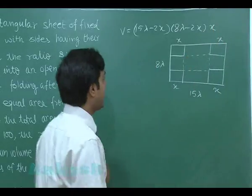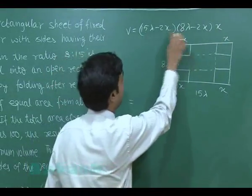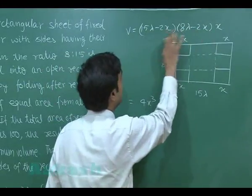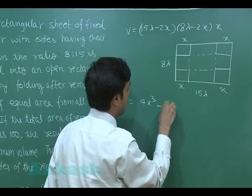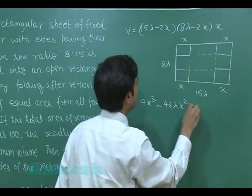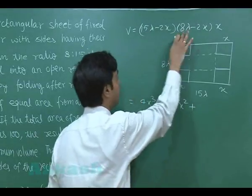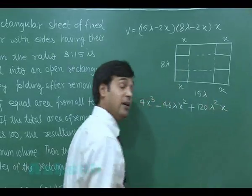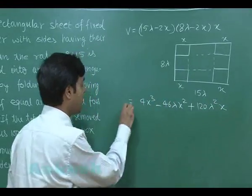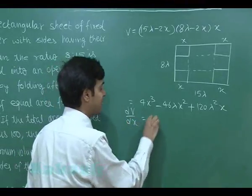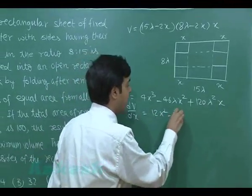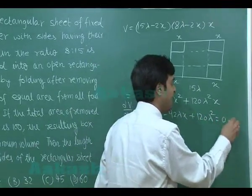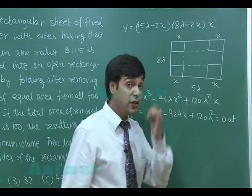Simplifying by expanding, we get V = 4·4x³ − 46λx² + 120λ²x. Differentiating to maximize: dV/dx = 12x² − 92λx + 120λ² = 0.